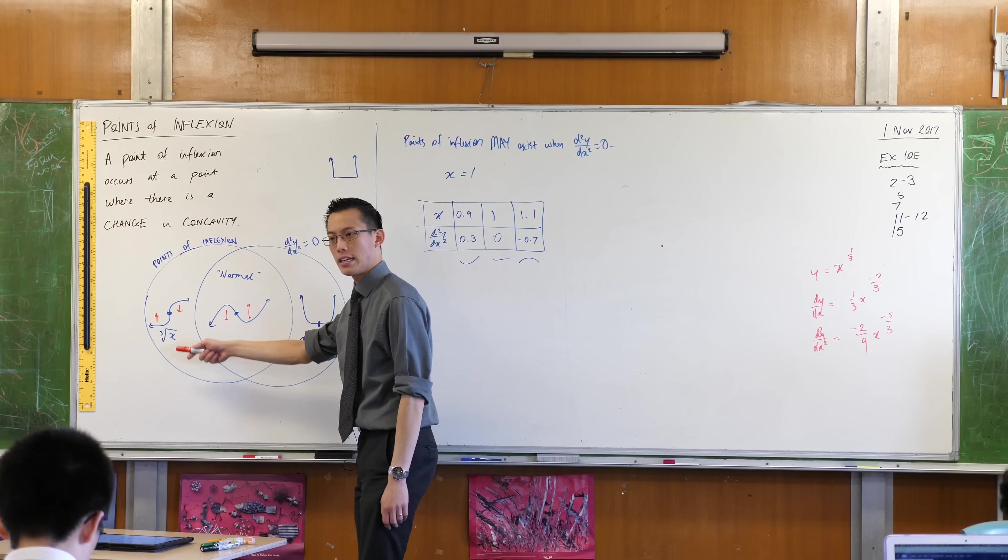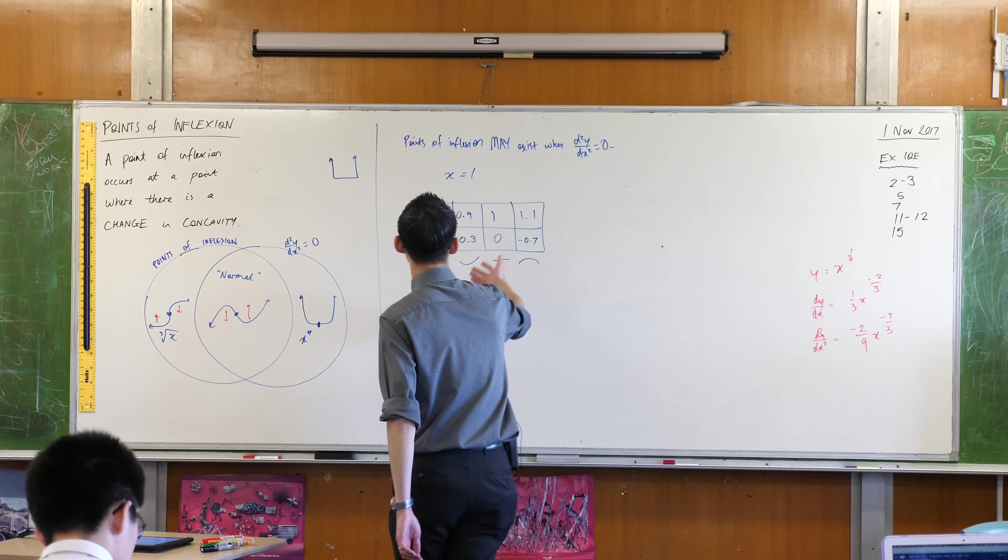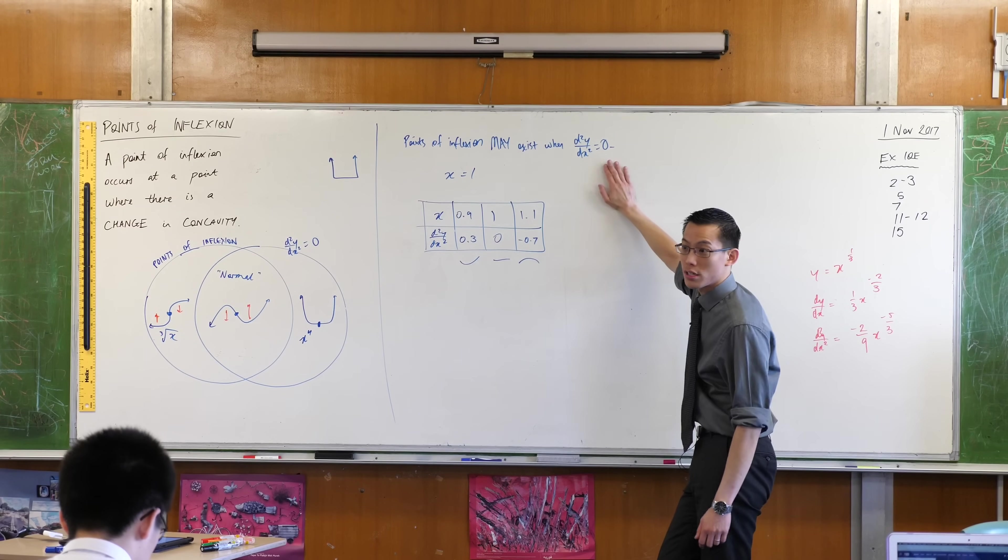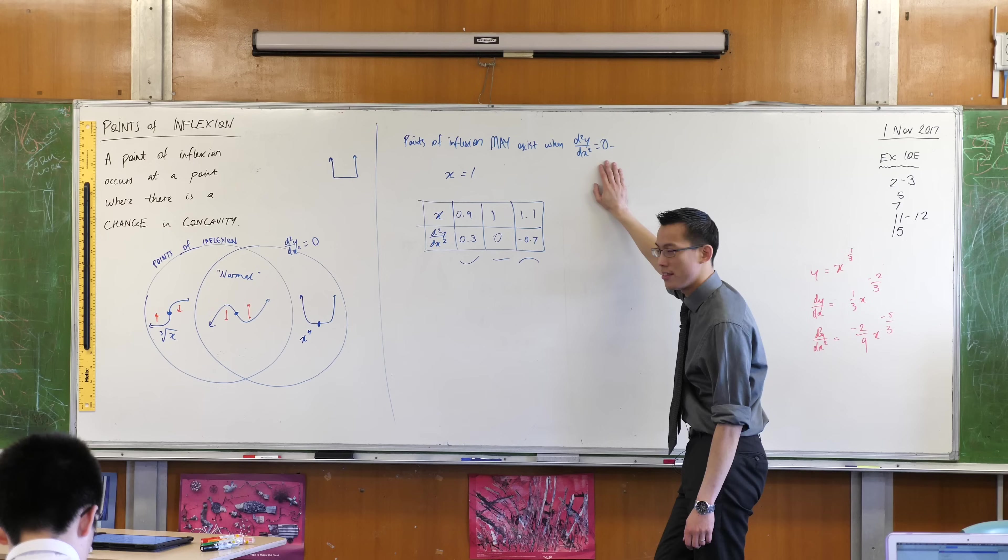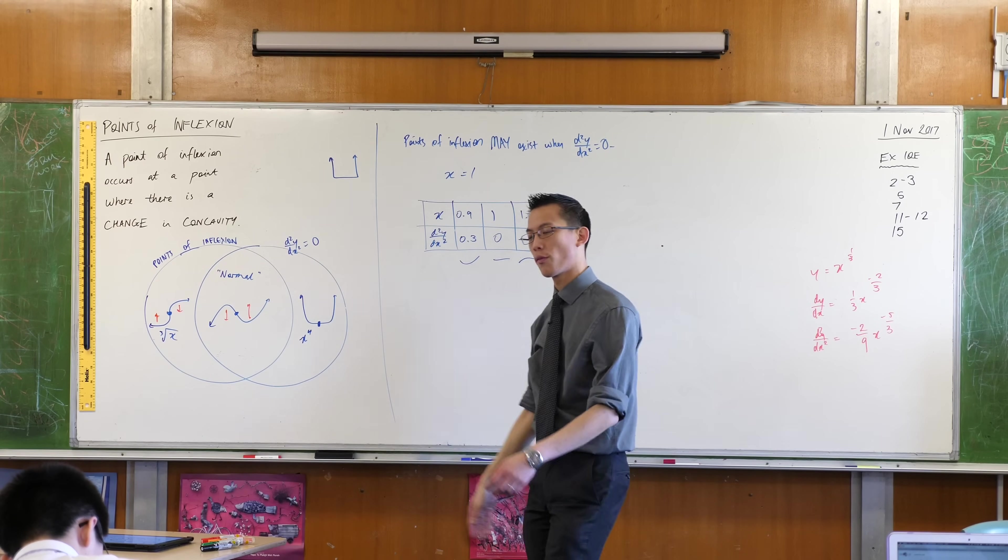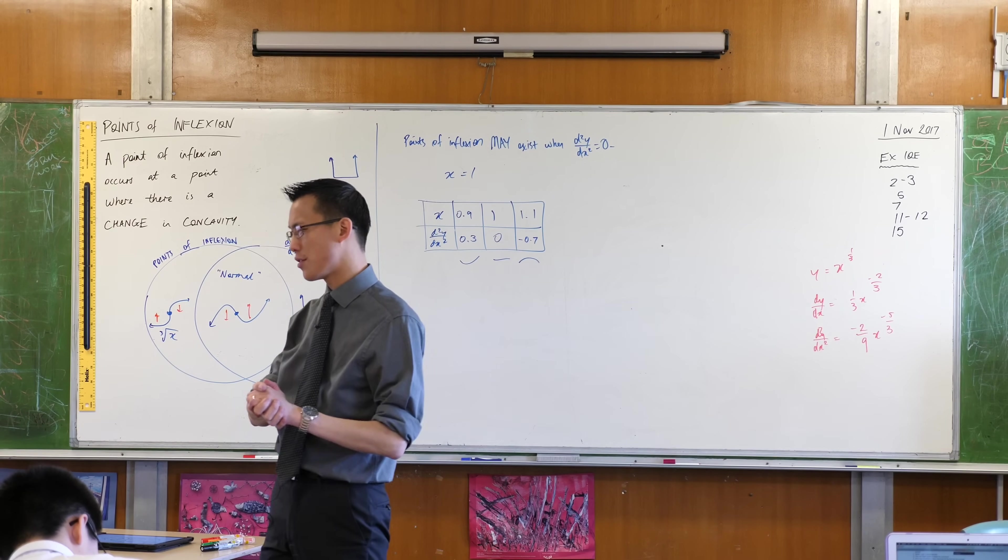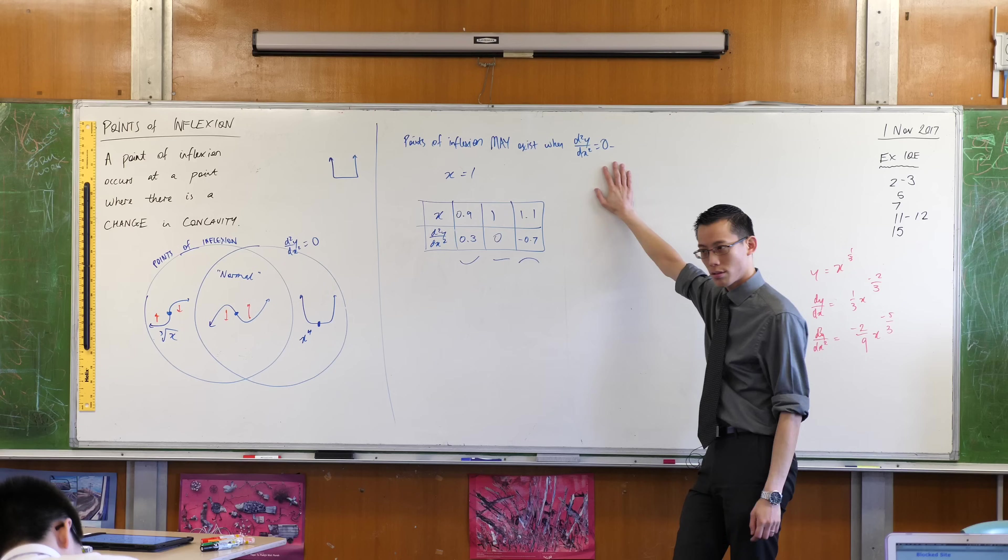However, you can't find, if you did a question like find the points of inflection. The normal thing you would do instinctively is go to the second derivative, but you will find no solutions there. Instead, you will find there's no second derivative. So it's just as important to look for discontinuities of the second derivative as it is to look for zero values.